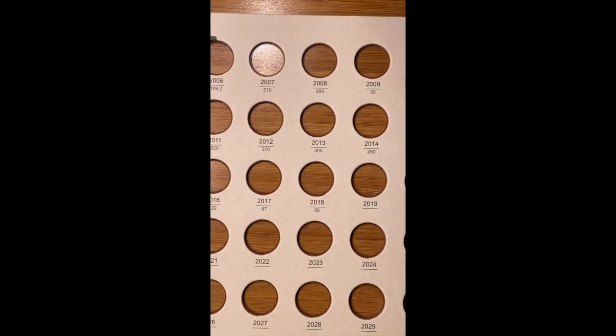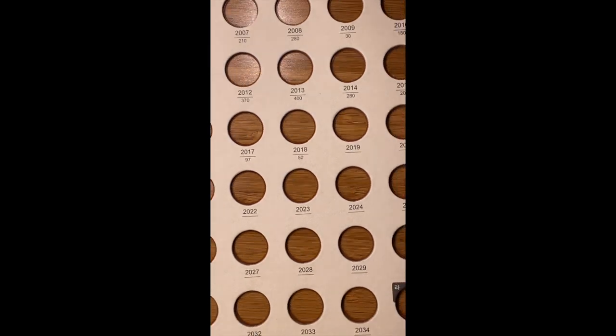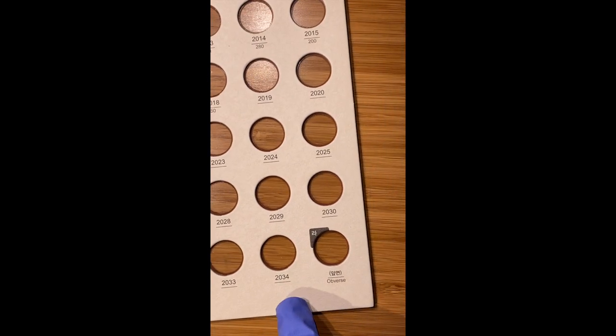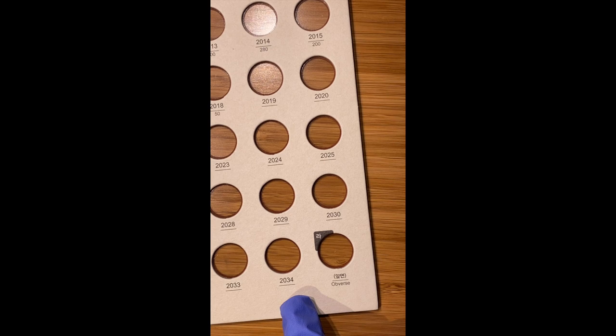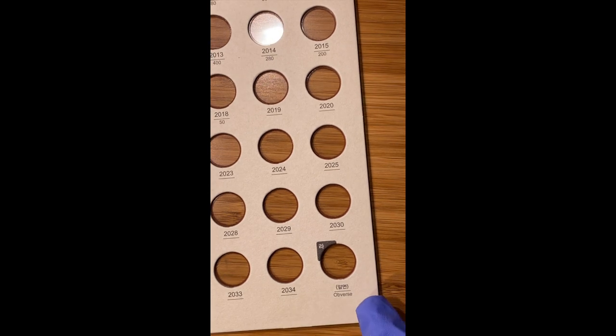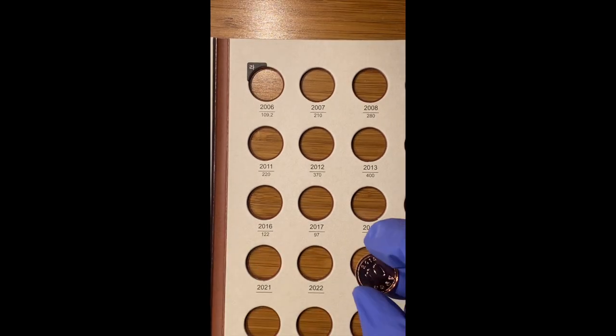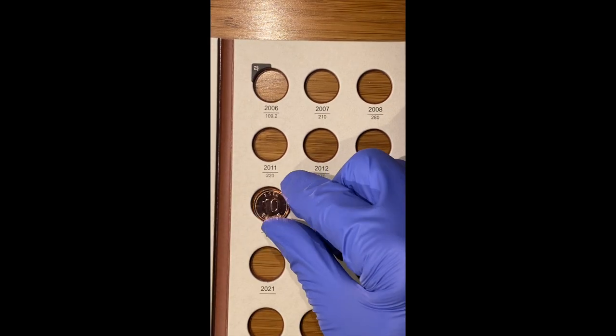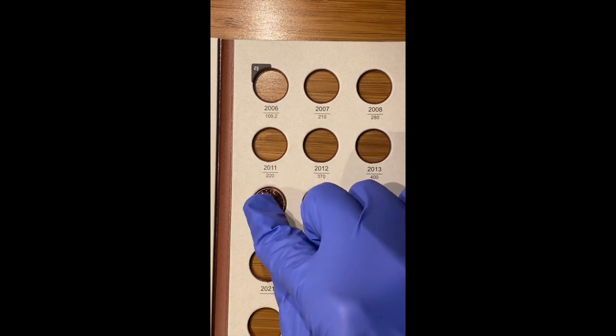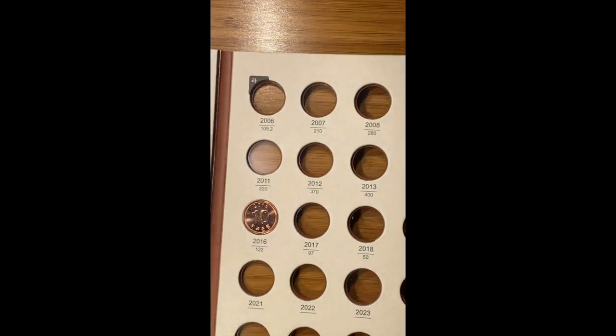You will notice that the mintage numbers end in 2018, and the collector will have to add any subsequent mintage numbers below the dates for these coins if desired. The folder has holes for coins dated up to 2034, and the superfluous hole to display the obverse. I have a ten-won coin for the 2016 hole. Checking the fit. Very good.